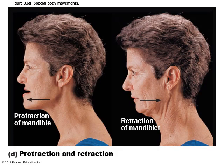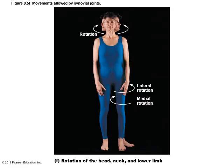Jutting the jaw forward is protraction of the mandible; pulling the jaw back is retraction of the mandible. You can also rotate — the head, the arm, and the leg. With the leg, lateral rotation is turning the foot to the side; medial rotation is turning the foot inward.